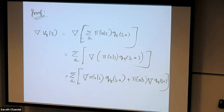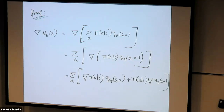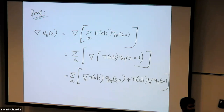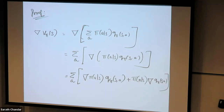Which of these terms is difficult to compute? The gradient of Q^π is difficult to compute — the other terms are easy. Our goal is to somehow get rid of this gradient of Q^π. We are going to do that by a little bit of algebra — you have to follow closely.